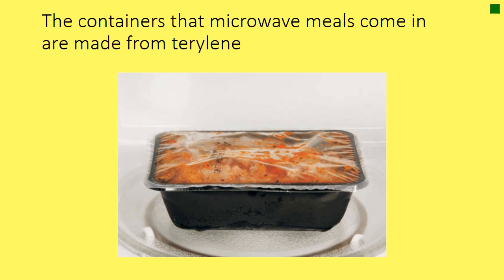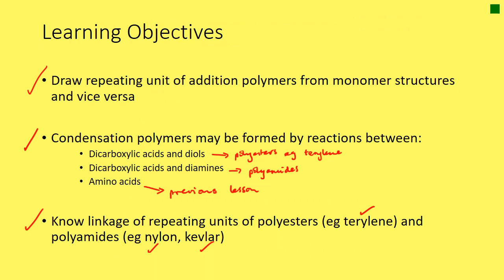Lastly, let's go through our learning objectives to make sure we've covered everything. We did our addition polymerization, and we've looked at carboxylic acids and diols to make our polyesters, and we looked at an example of terylene. When we combined dicarboxylic acids and diamines they gave us our polyamides, and we had a look at nylon and Kevlar individually. Amino acids we did in our previous lesson. Whilst doing condensation polymers we looked at the units of terylene, nylon, and Kevlar. So there you have it — you have all you need to know about polymers in this video. Hope that's been good for you.